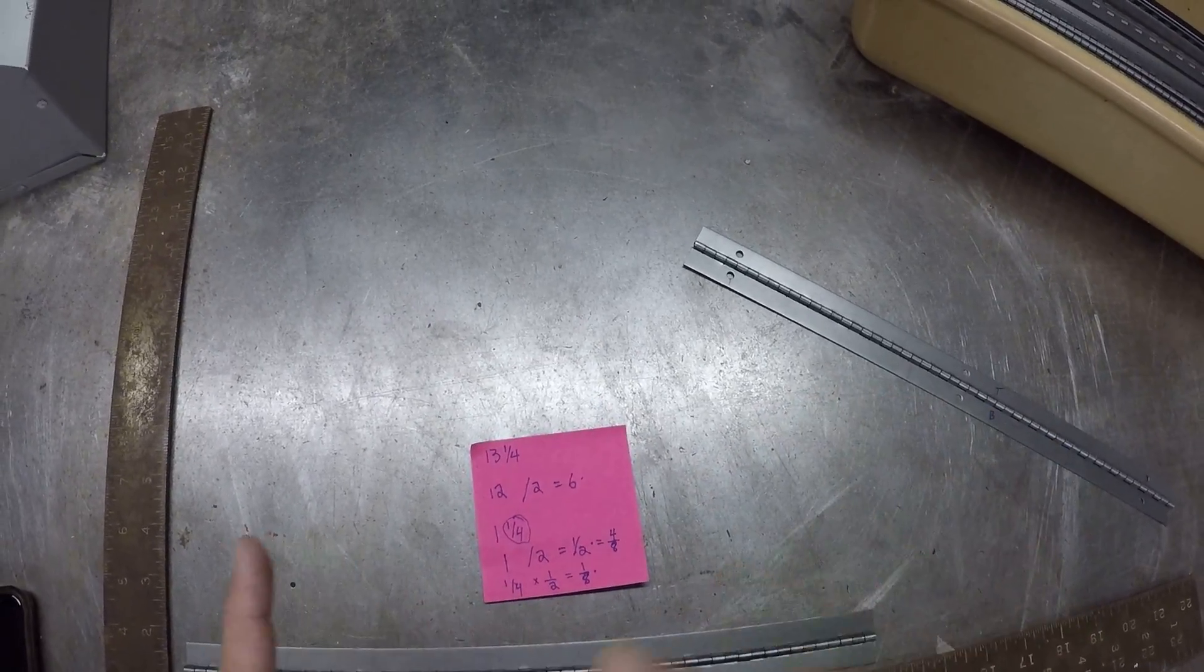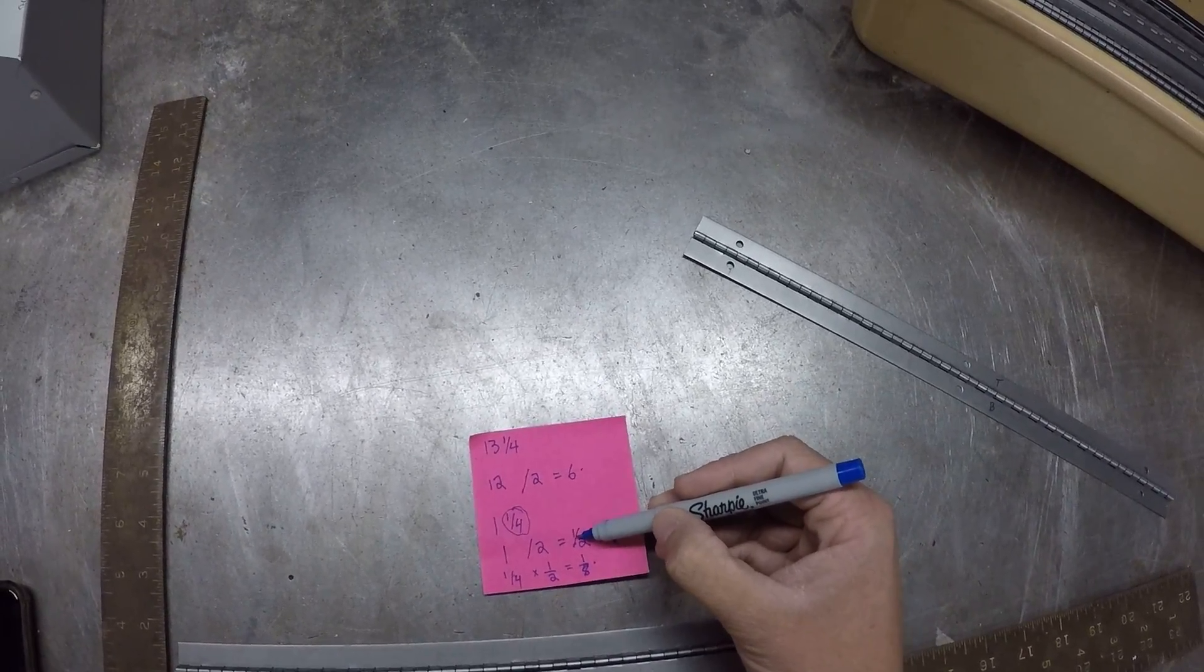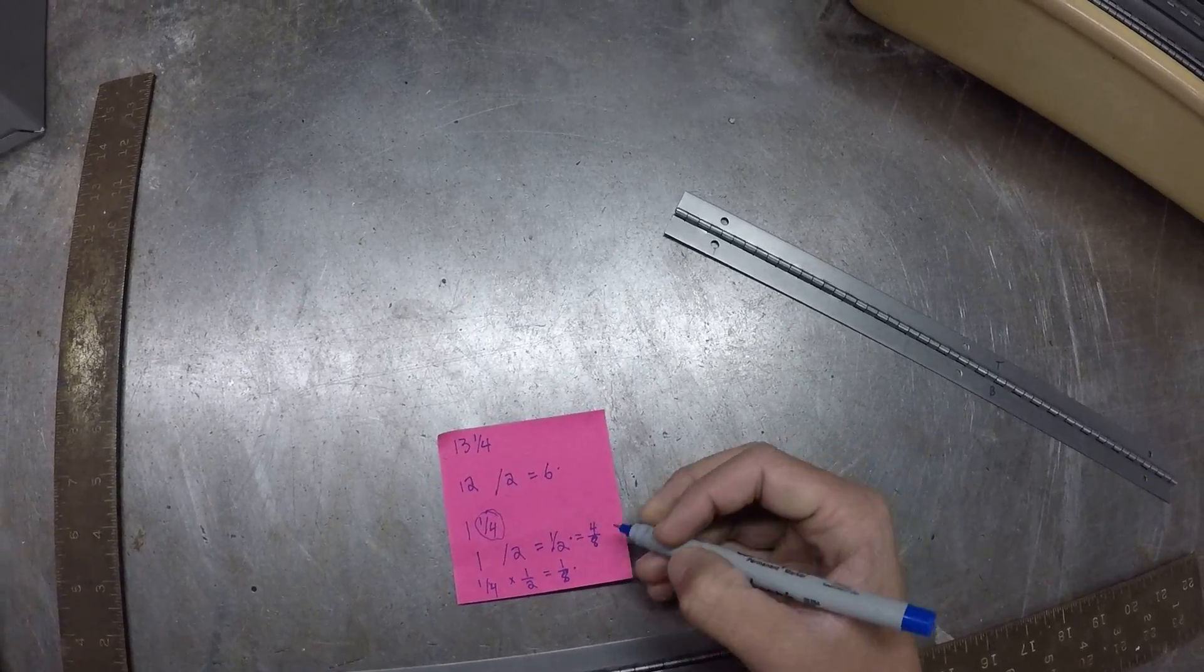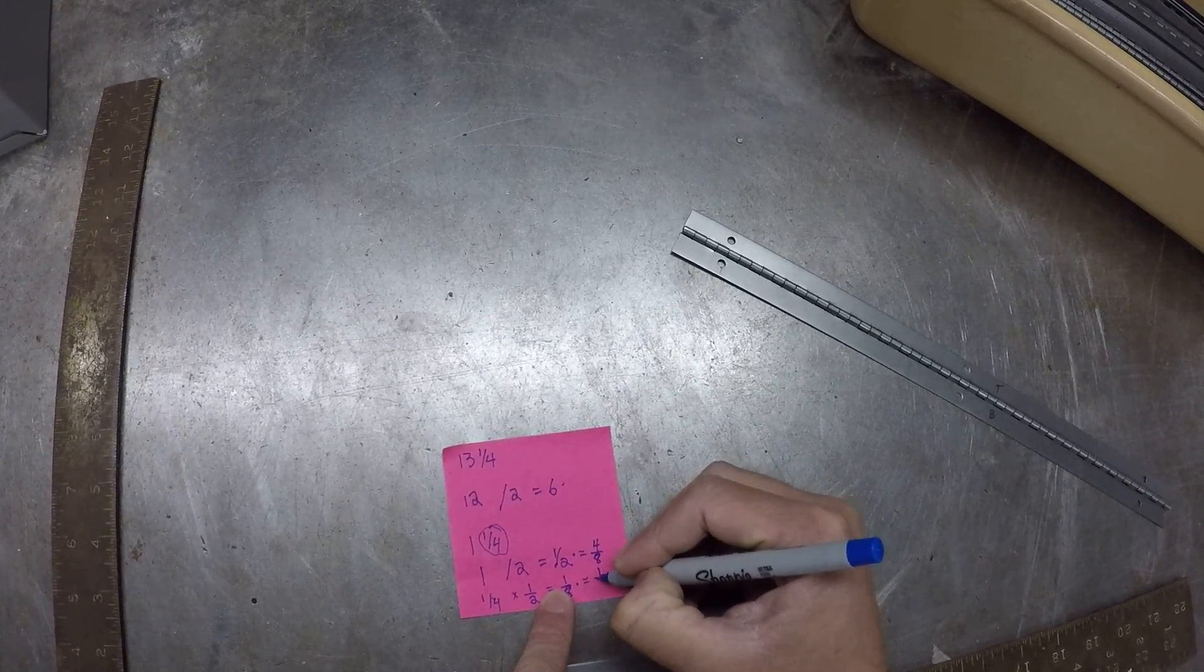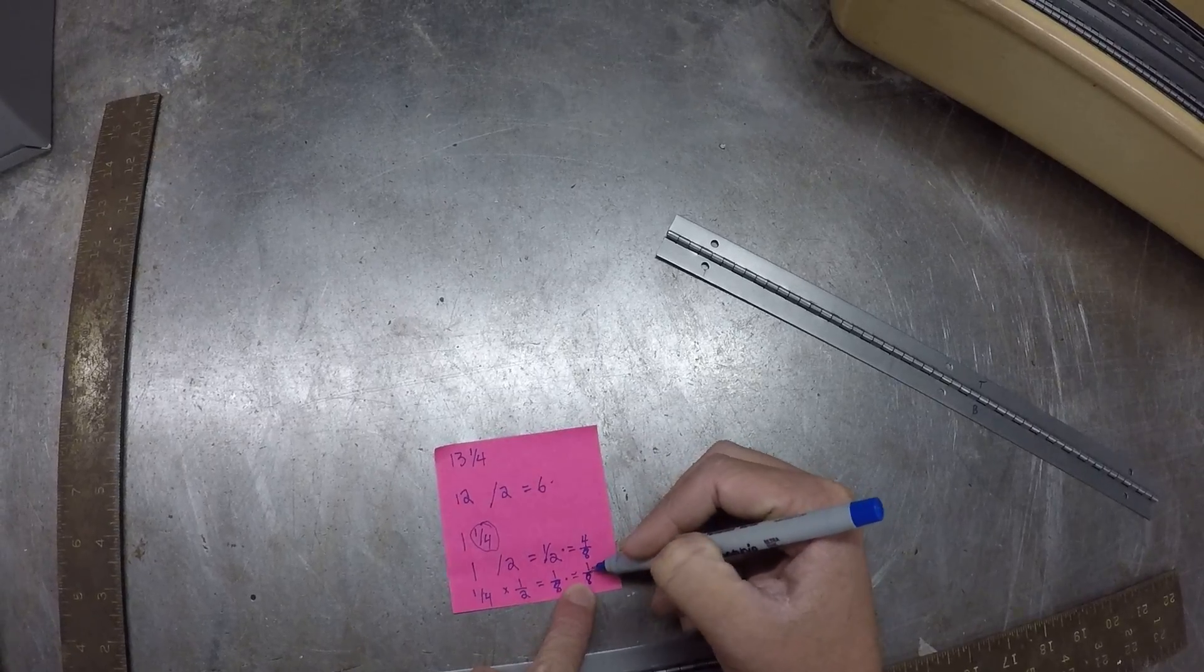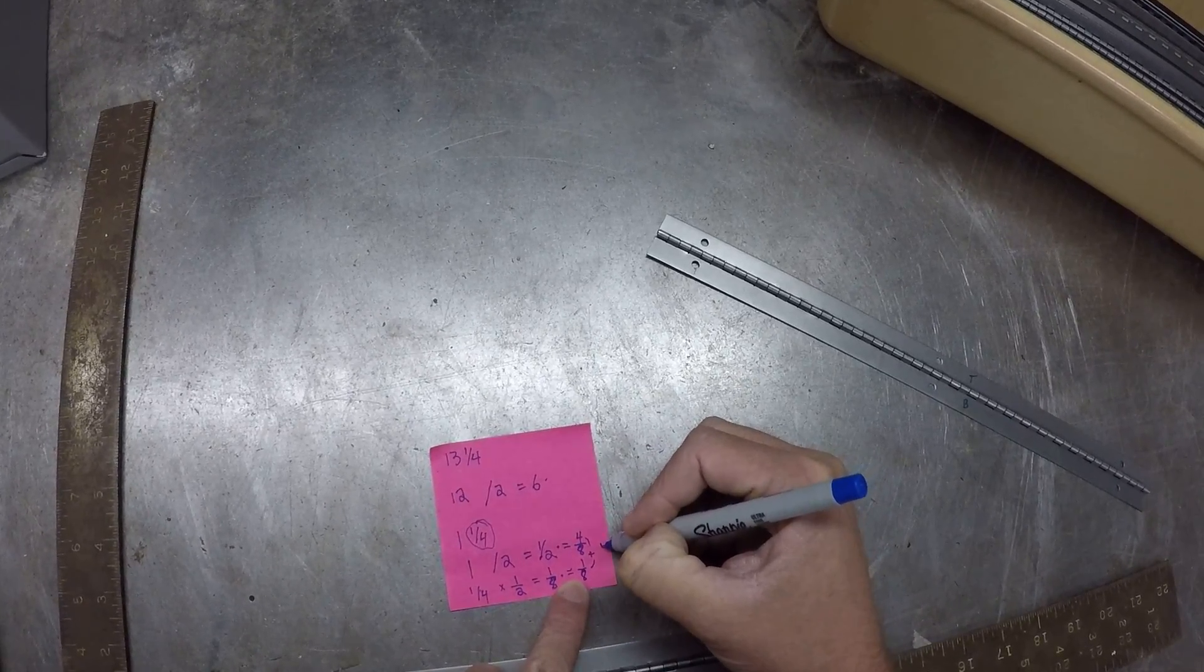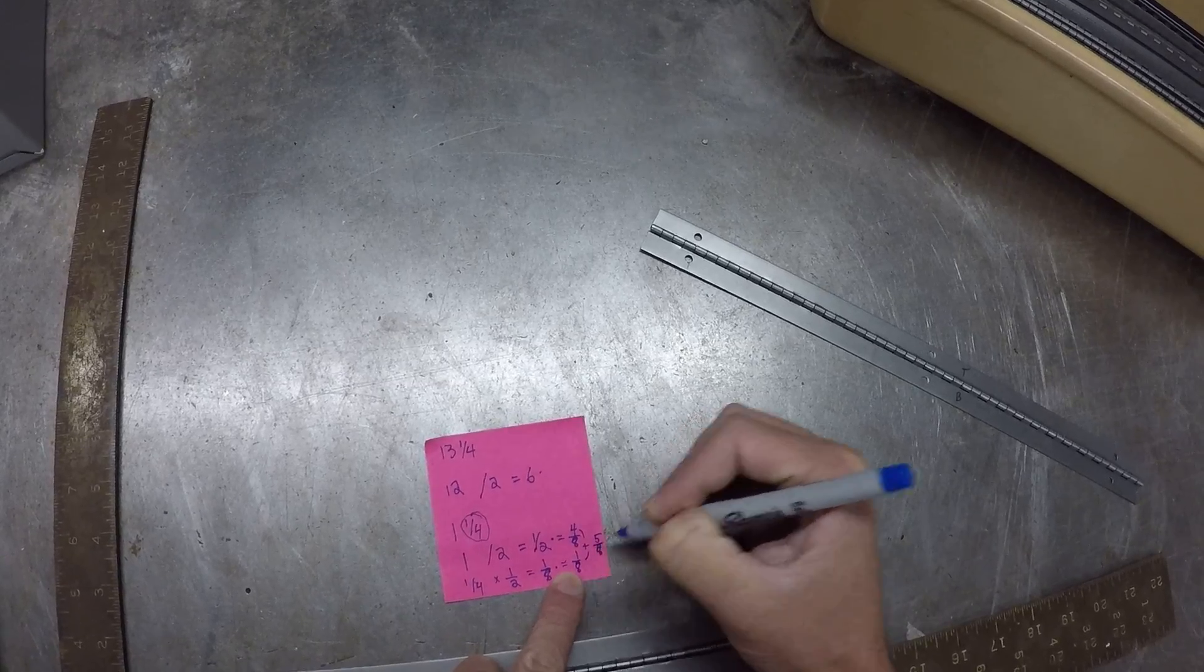So we know how to reduce four eighths down to a half. Well, I'm going to go the opposite direction. I need four eighths so that I can add it with one eighth. If I were to add these two together, I get five eighths.